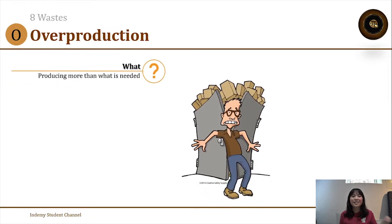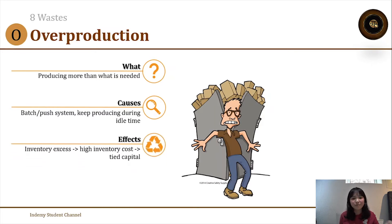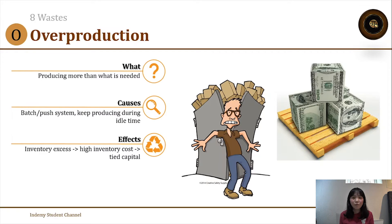The next waste is overproduction — producing more than what is needed. It is caused by a batch or push system, which is not always wrong, but can lead to overproduction waste. Another cause is the tendency to keep producing during idle time. The effects include excess inventory, high inventory costs, and tight capital tied up in the warehouse.